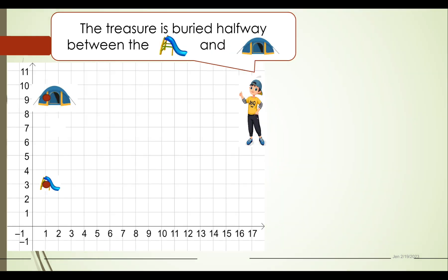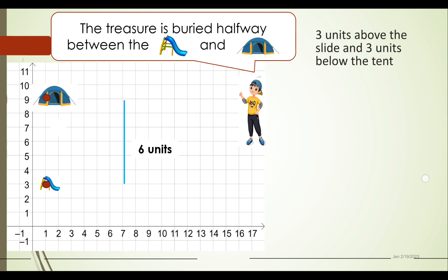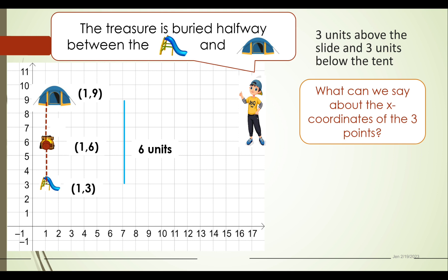Next: the treasure is buried halfway between the slide and the tent. Let us take the whole distance from the slide to the tent — by counting, we get 6 units. Since the whole distance is 6 units and we are talking about halfway, the treasure is found 3 units above the slide and 3 units below the tent. The coordinates of the slide are (1, 3), the tent is at (1, 9), and the treasure is at (1, 6). The x-coordinates of all three points — 1, 1, and 1 — are all equal, because we did not move sideways; the motion is only upward.